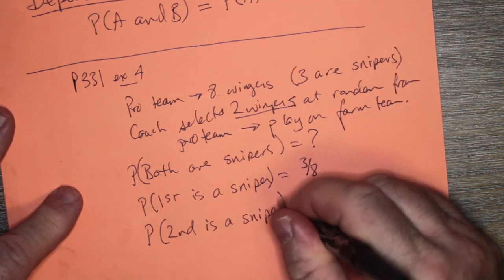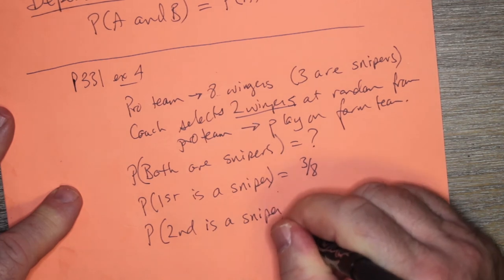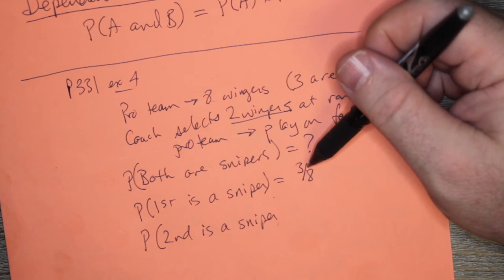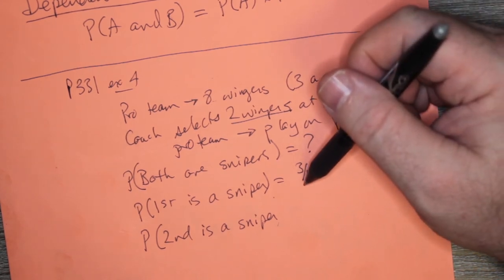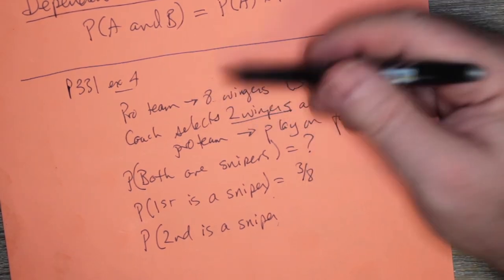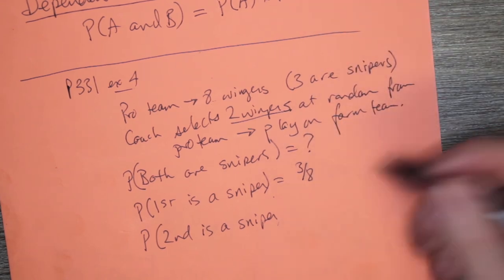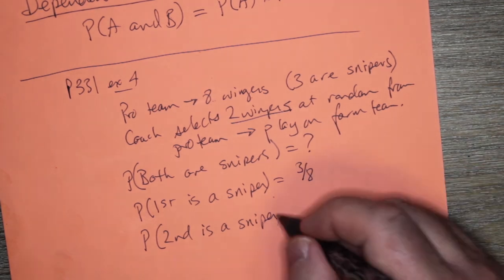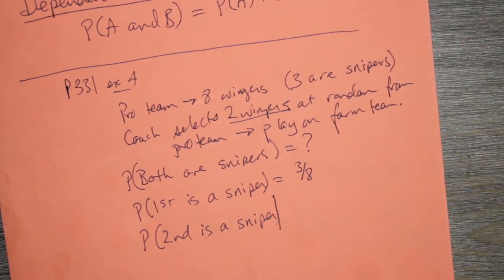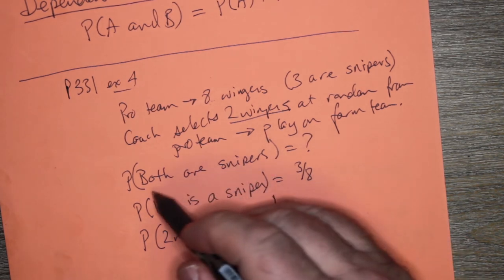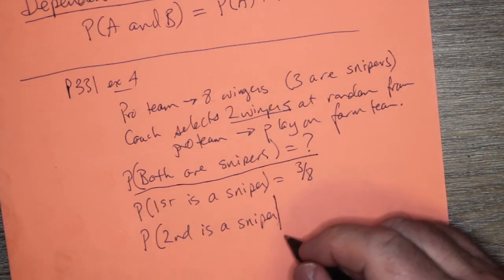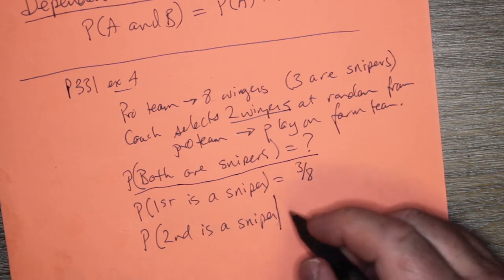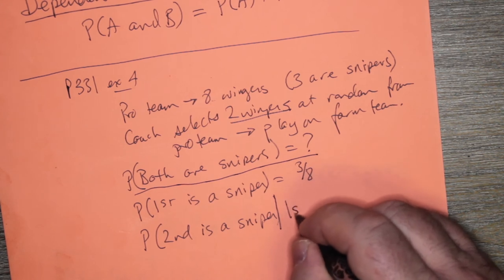Now I can't just say the probability that the second is a sniper because you don't know what's happened. Because actually I could have picked a sniper, but then I might not have. I mean, I could have picked maybe one of the wingers. It's just a mediocre pro player from the Toronto Maple Leafs. Who cares? Well, because the question is asking what the probability of both being snipers are, we have to say we're only interested in the probability that the second is a sniper given that the first is a sniper.